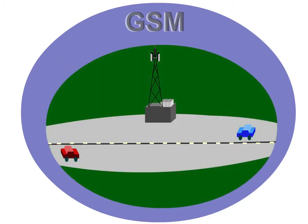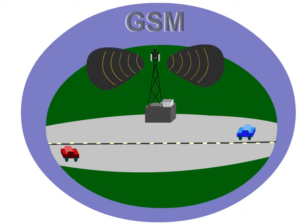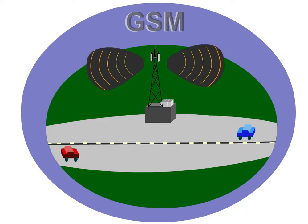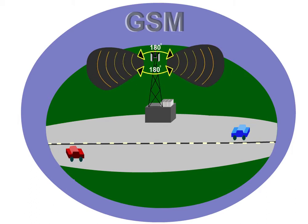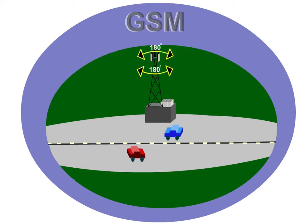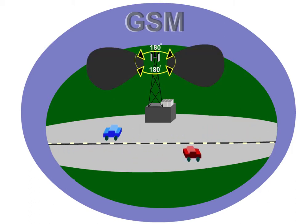On motorways, base transceiver stations are preferentially configured in two sectors. For example, the BTS transmits frequencies in 2x180 degrees. The cell is aligned along the course of the road to be covered.